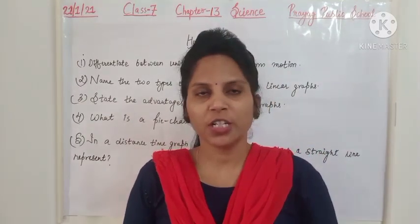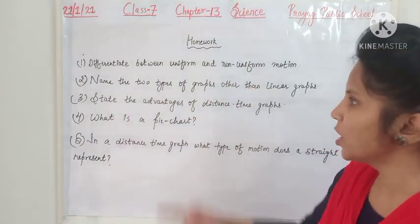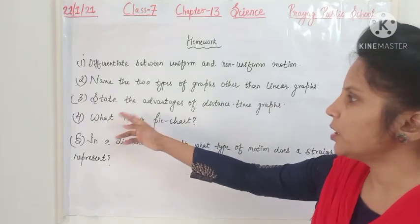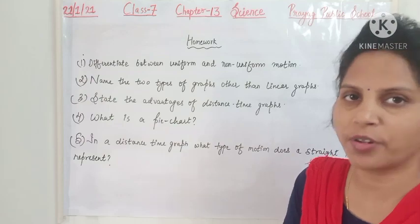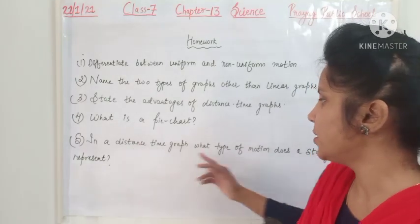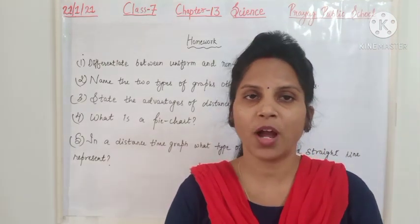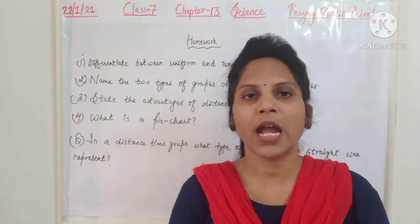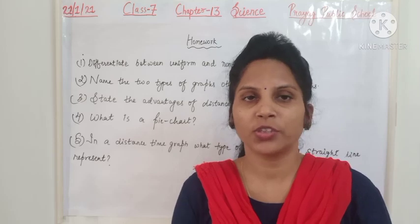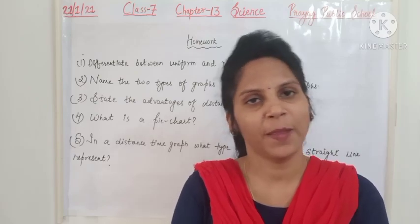That's all for today. Today's homework: Question 1 — differentiate between uniform and non-uniform motion. Question 2 — name the two types of graphs other than linear graphs. Question 3 — state the advantages of distance-time graphs. Question 4 — what is a pie chart? Question 5 — in a distance-time graph, what type of motion does a straight line represent? Write the answers in your homework copy in neat and clean handwriting, and read the distance-time graph topic thoroughly so you can draw it.